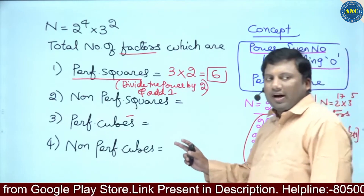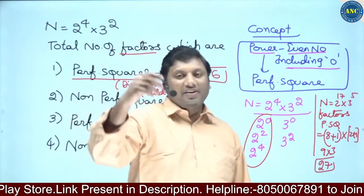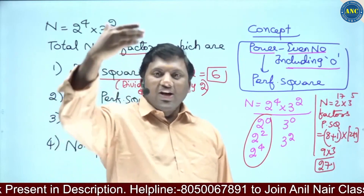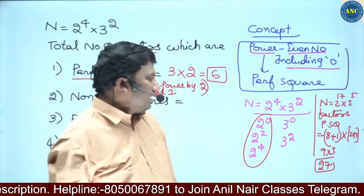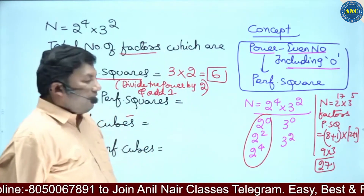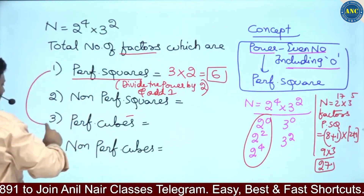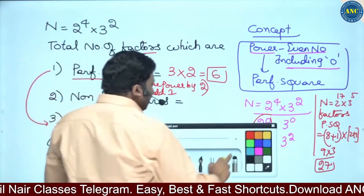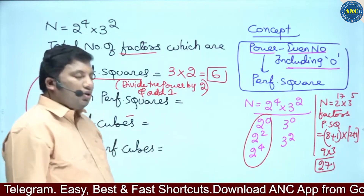Why did I take only 8 cases for 2¹⁷? The cases are 2², 2⁴, 2⁶, ... 2¹⁶ — that's 8 cases. And we add 1 for 2⁰, since 1 is a factor of any number. So: divide the power by 2 and add 1. This first concept — divide the power by 2 and add 1 — can also be extended to the third concept.